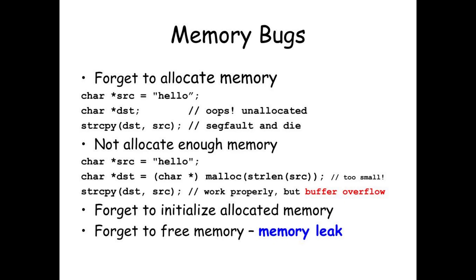Throughout history, coders have made mistakes in deallocating dynamic memory from the heap, causing memory leaks. When this happens, code can malfunction, the computer may run out of memory, and data can be overridden prematurely — especially in programs that feature concurrency and parallelism. Such bugs in concurrent code can be notoriously difficult to debug.